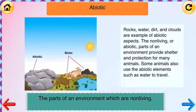Abiotic: the parts of an environment which are nonliving. Rocks, water, dirt, and clouds are examples of abiotic aspects. The nonliving, or abiotic, parts of an environment provide shelter and protection for many animals. Some animals also use the abiotic element such as water to travel.